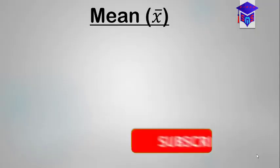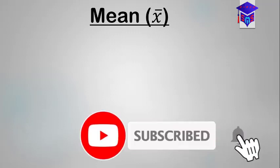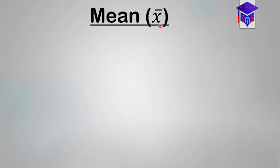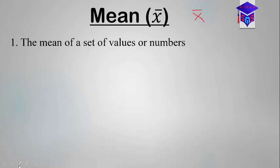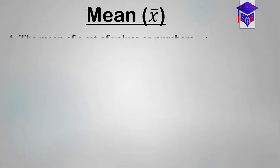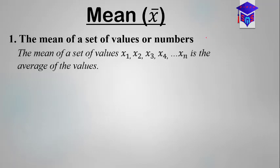Today we're going to talk about the mean. The mean is usually denoted by X̄ — that's an X with a bar on top. In this video we'll look at the mean of a set of values or set of numbers when you're given them and have to find it. So the mean of a set of numbers or set of values: the mean of a set of values x1, x2, x3, x4 up to xn.